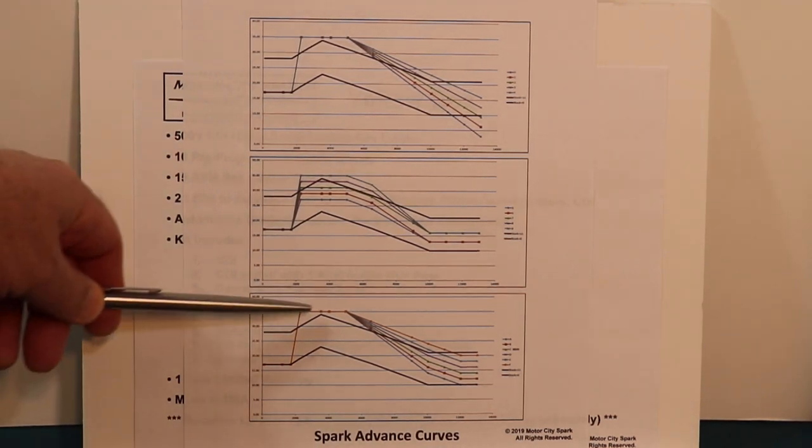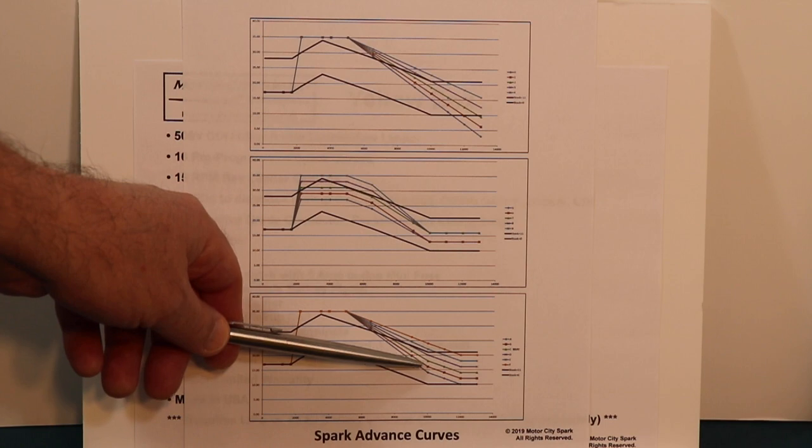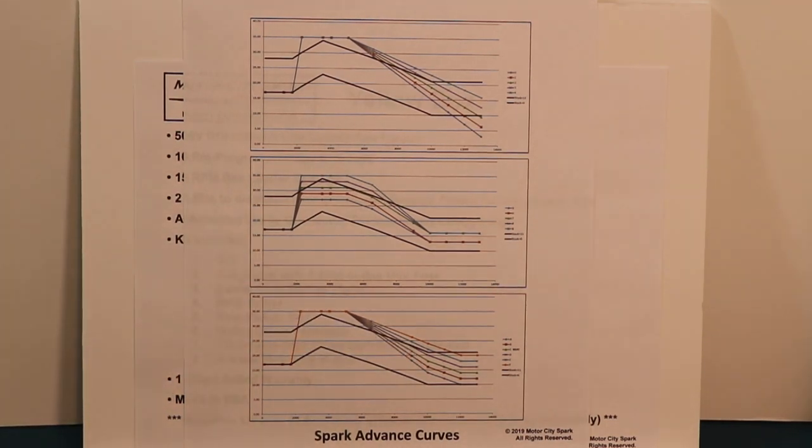Now the green curve down here, that's third from the bottom, that is the black box number nine curve. That is the maximum timing that was in the black box. We got requests from people that they wanted more timing. So now there's three more curves above that that they can dial up the timing quite a bit now.